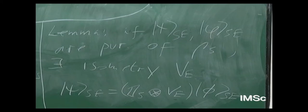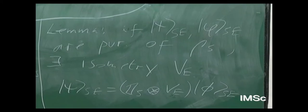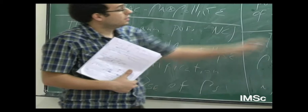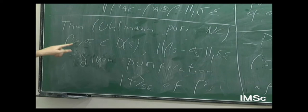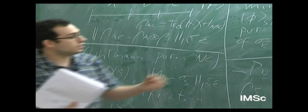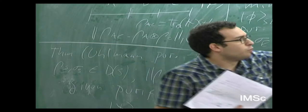To clarify the minimum in Uhlmann's theorem: you could also fix some purification and optimize over it. What the theorem says is: given two states that are close, you pick any purification of rho, and you can always find a purification of sigma for which they are still close. So you can boost the fact that two states are close to their purifications being close as well. The minimum just means: over all purifications of sigma, the best one is still close to the chosen purification of rho.